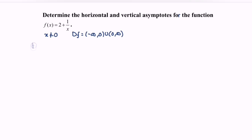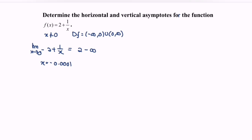So the limit when x approaching 0 from the left for the function 2 plus 1 over x. Based on the situation, the suggested test value will be x equals negative 0.0001. If we substitute, we will have a value which is 2 minus an infinity value. So the limit when x approaching 0 from the left gives us negative infinity.